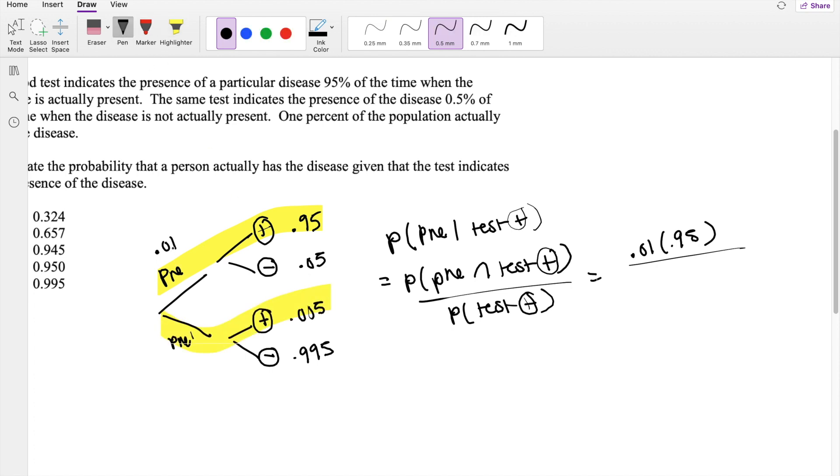So if 0.01% of the population actually has the disease, then that means 0.99 of the population does not have the disease. So then multiplying these together, you're going to get 0.01 times 0.95 plus 0.99 times 0.005.